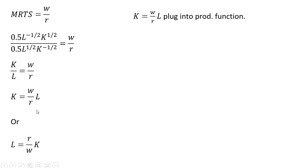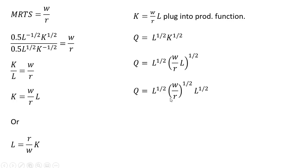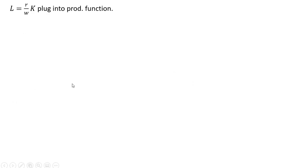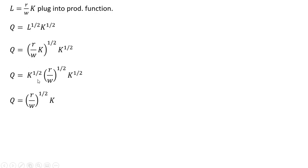Our next step is to take the expression where capital equals the wage divided by the price of capital times L, and plug it into our production function. Where we have K, we replace it with this term. Simplifying, L to the one-half times L to the one-half is just L. Simplifying further, we get the conditional input demand for labor. Now taking the expression L equals R divided by W times K and plugging it into the production function where we have L, replacing it, and solving for K gives us the conditional input demand for capital.